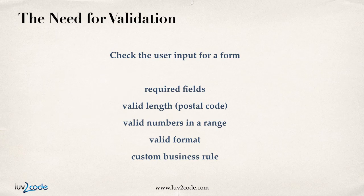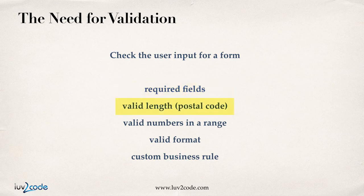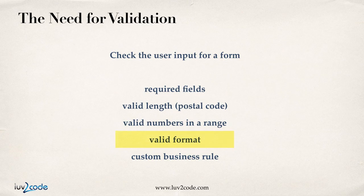Whenever you create an HTML form, or a JSF form for that matter, you need to check the user input. When they're entering the data, you may have certain fields in your form that are required. You also may have to validate the length of a field — say for example, the number of digits in a postal code — or validate numbers in a range, like you'll only accept the numbers 1 to 50. You may have to validate the format of data, like making sure it's a valid email address. Finally, you may have your own custom business rule that you need to apply for validation.